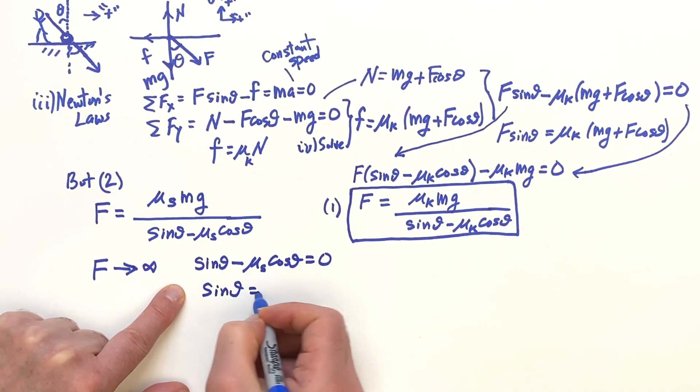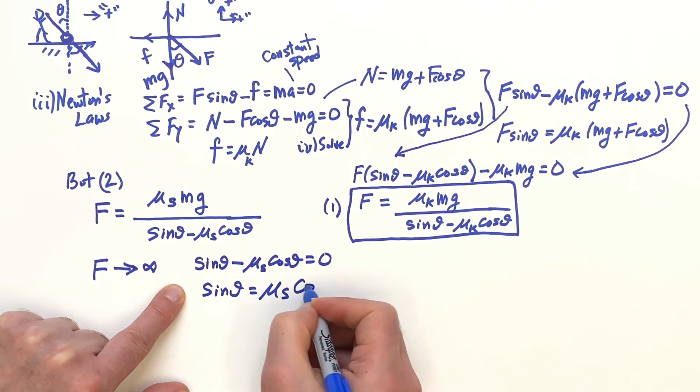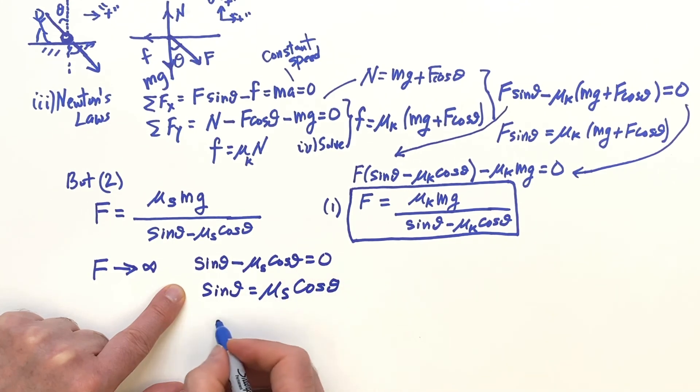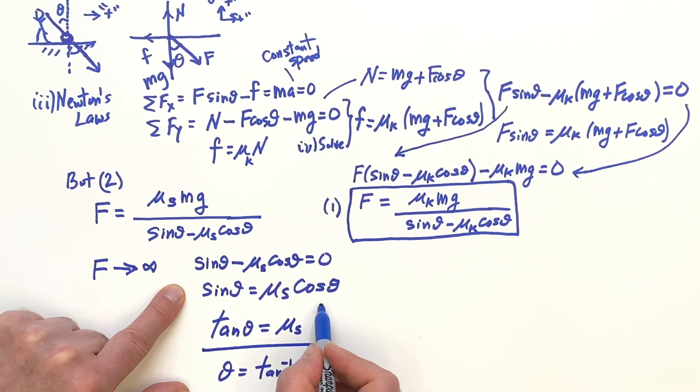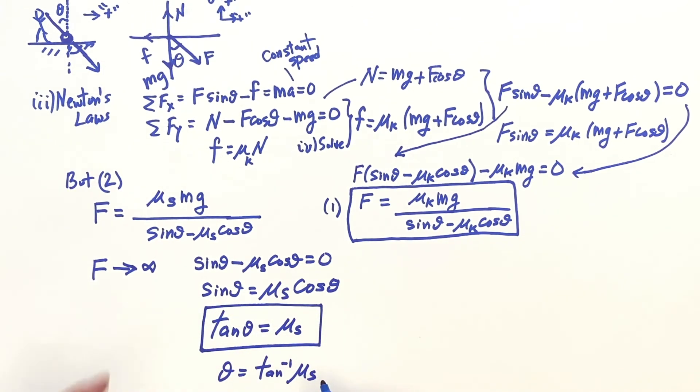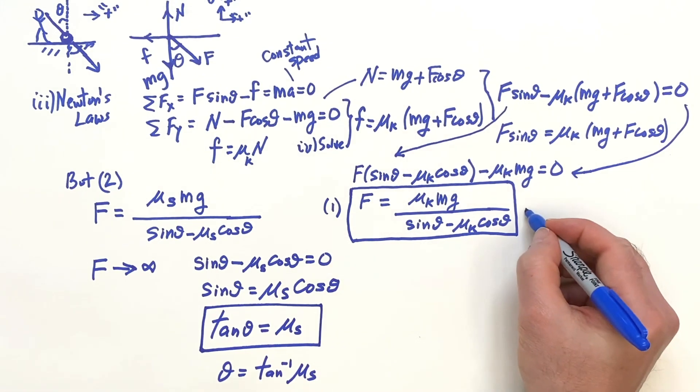So that means sin θ is μ_s cos θ, and that means the tangent - it's a nice little result - is equal to μ_s. So the angle would be the inverse tangent of μ_s. I kind of like this equation, this form looks cool, but either way works. So these are your answers here.